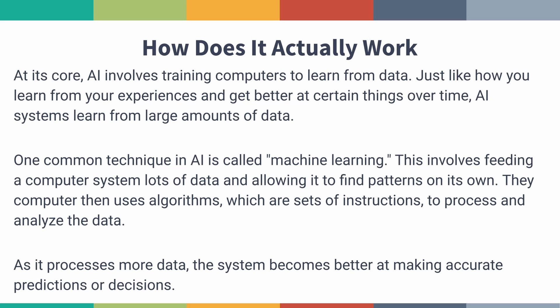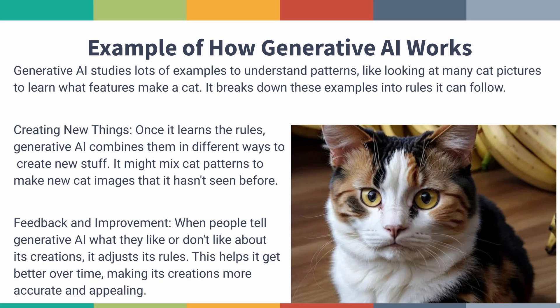It then uses algorithms to process and analyze all that data. Generative AI takes lots of examples to understand patterns — like looking at many pictures of cats to learn what makes a cat. You can see there's a picture here of a cat that looks almost real, but is not. AI creates new things by learning the rules and combining them in different ways. It might mix cat patterns to make new cat images it hasn't seen before, then use feedback to tweak and adjust the rules.